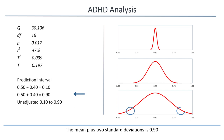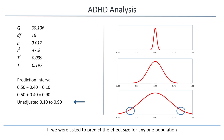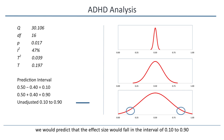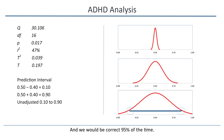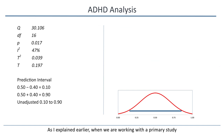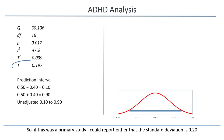For clarity, I'll use round numbers. The mean is roughly 0.50, and the standard deviation is roughly 0.20. The mean minus two standard deviations is 0.10, and the mean plus two standard deviations is 0.90. So the prediction interval is 0.10 to 0.90. If we were asked to predict the effect size for any one population selected at random from the universe of relevant populations, we would predict that the effect size would fall in the interval of 0.10 to 0.90, and we would be correct 95% of the time. As I explained earlier, when we're working with a primary study, we can report either the standard deviation or the prediction interval.